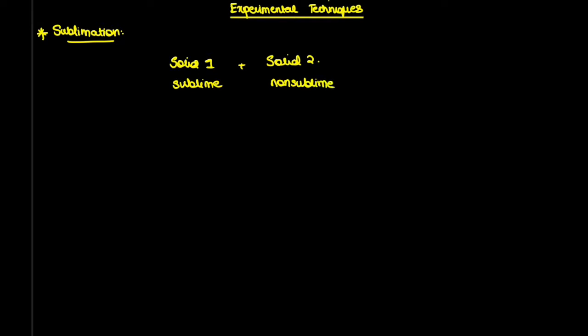One of them needs to be sublime and the other needs to be non-sublime. There are a few solids you need to know as a fact that are sublime. One of the most important ones mentioned in this chapter are ammonium compounds — ammonium salts.